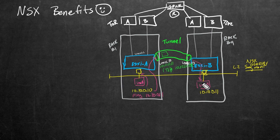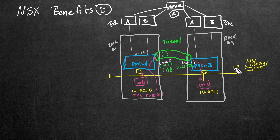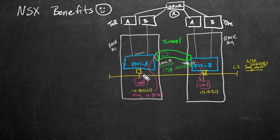The visual representation of that is right here. VM A and VM B are both connected to the same layer-two overlay segment as part of NSX — the same layer-two broadcast domain — and the traffic is actually being sent over the tunnel between ESXi A and ESXi B.